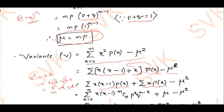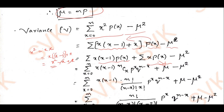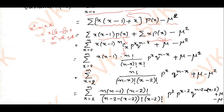Substituting p(x) according to the binomial distribution, p(x) = nCx · p^x · q^(n−x). Applying the definition of combinatorics, nCx = n! / [(n−x)!·x!], so we have the summation of x(x−1) · n!/[(n−x)!·x!] · p^x · q^(n−x).